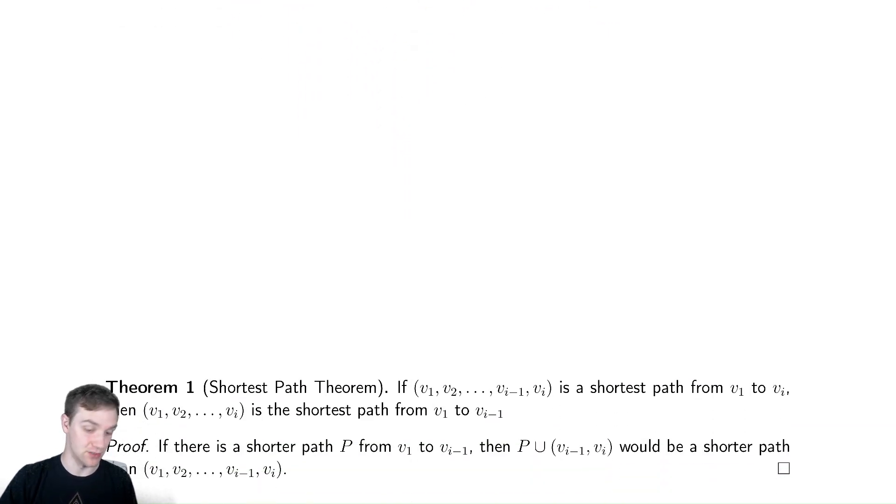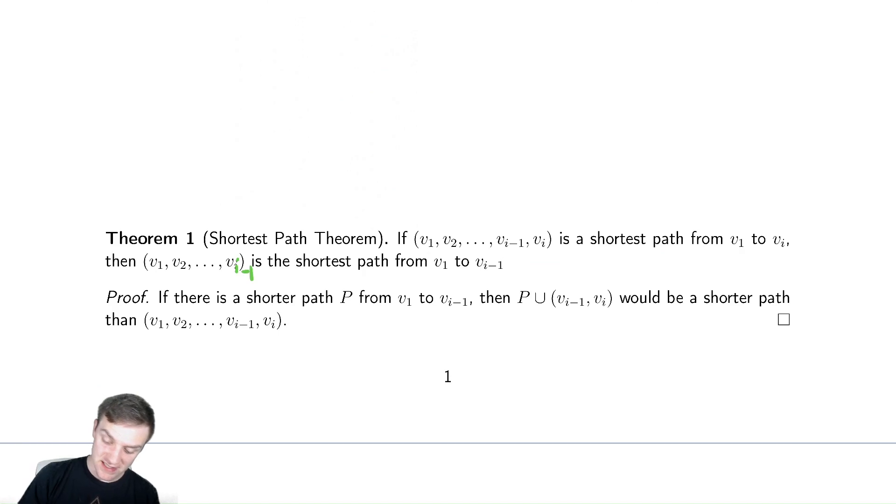So let's look at that mathematically, it's a little easier to understand. This theorem says if I have the shortest path from v1 to vi, then the shortest path from v1 to vi-1 must be that same path, the exact same set of nodes. If there was a shorter path, then we would simply use that shorter path and then add on the edge from vi-1 to vi, and find a shorter path from v1 to vi, therefore this must be the shortest path. I have a typo in my notes that will be updated in your version of the notes.